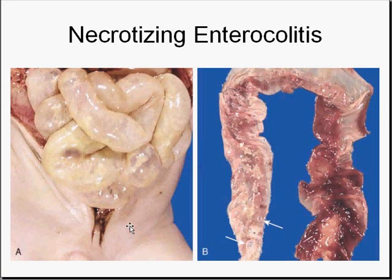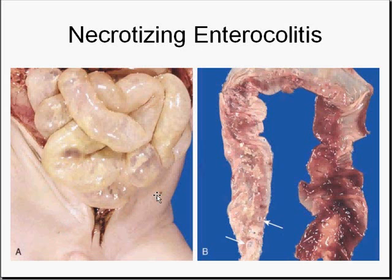A typical case of necrotizing enterocolitis looks hemorrhagic — the bowel wall is inflamed and destroyed, the mucosa is broken down. In some cases, because of destruction, the bowel may be abnormally thin. There could be perforation and peritonitis. In addition, because some of these organisms can create gas, you can see what looks like little air bubbles in the wall, pointed to by arrows here. This condition is called pneumatosis intestinalis.